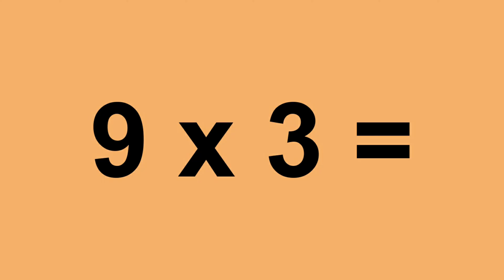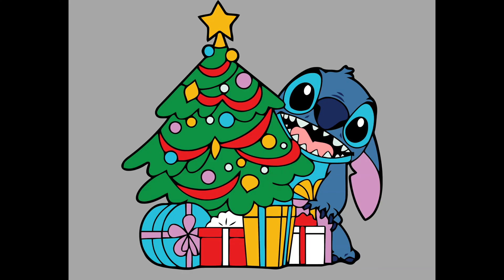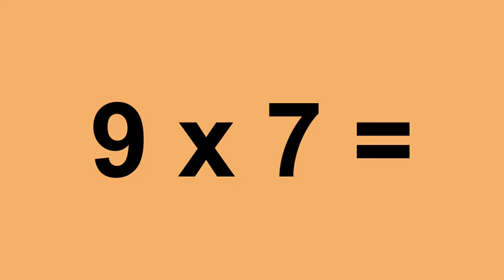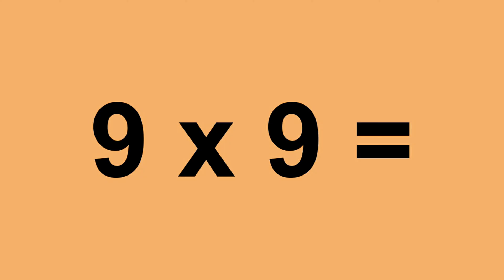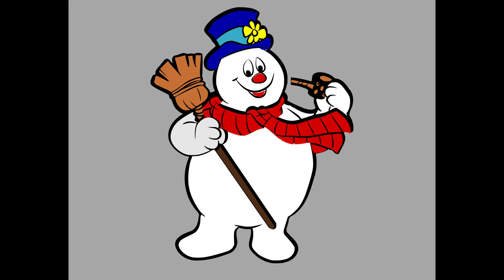Nine times three equals twenty-seven. Nine times four equals thirty-six. Nine times five equals forty-five. Nine times six equals fifty-four. Nine times seven equals sixty-four, nine times seven equals sixty-three. Nine times eight equals seventy-two. Nine times nine equals eighty-one. Nine times ten equals ninety. Nine times eleven equals ninety-nine. Nine times twelve equals one hundred and eight.